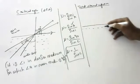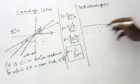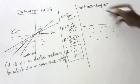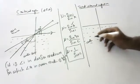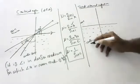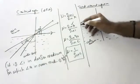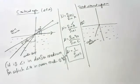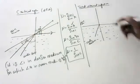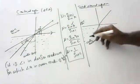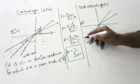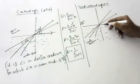Let me explain again. This is water, this is air. This is denser, this is rarer. Light going from denser to rarer moves away from the normal. If I still increase the angle of incidence, it moves further away, until it grazes through the medium like this.